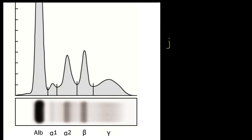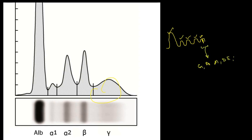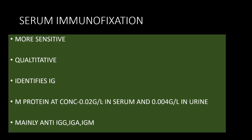This is a typical graph of serum protein electrophoresis, which consists of five peaks: albumin, alpha-1, alpha-2, beta-1, and gamma globulin. Usually monoclonality is seen in the gamma globulin region, which is the site for all IgG, IgA, IgM, IgD, IgE, or kappa or lambda. Sometimes it might be seen in the beta component also.